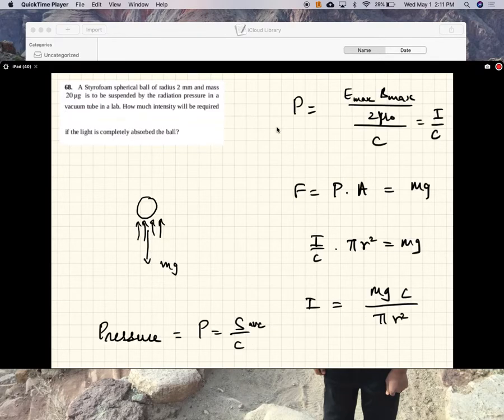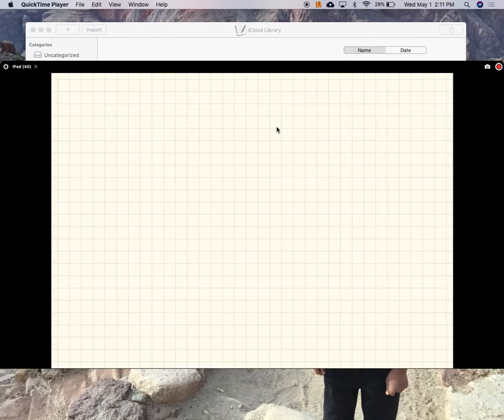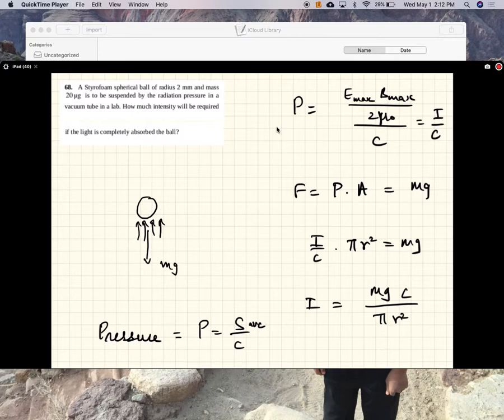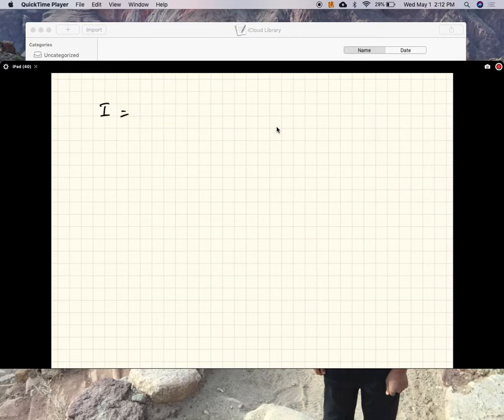So let's add a page. Okay, so the intensity of the light beam needed is MgC divided by pi R squared. M is 20 micrograms.